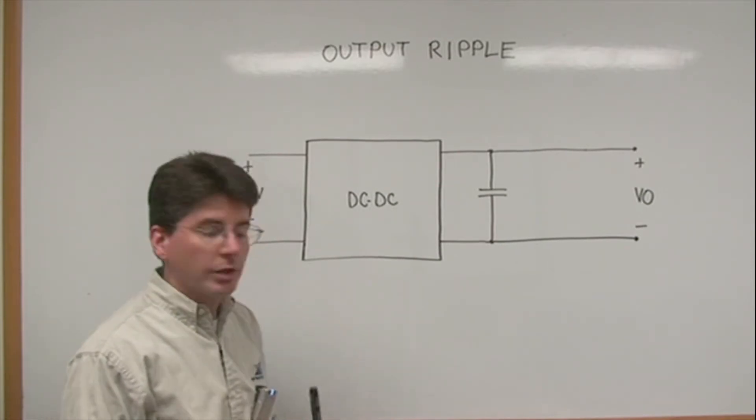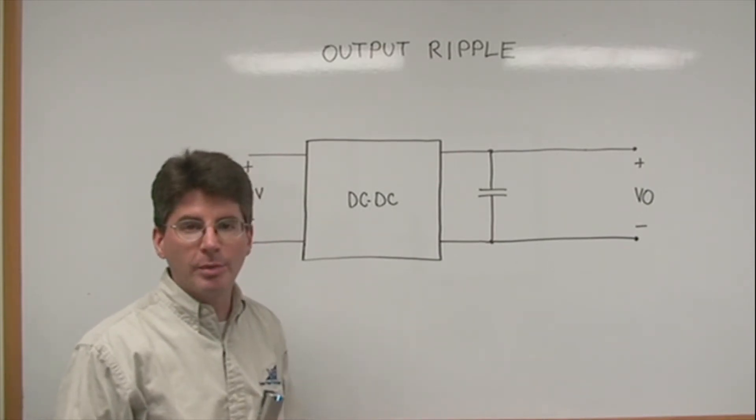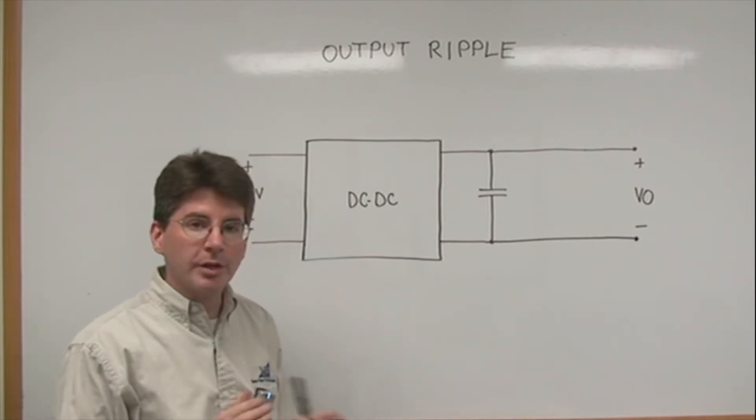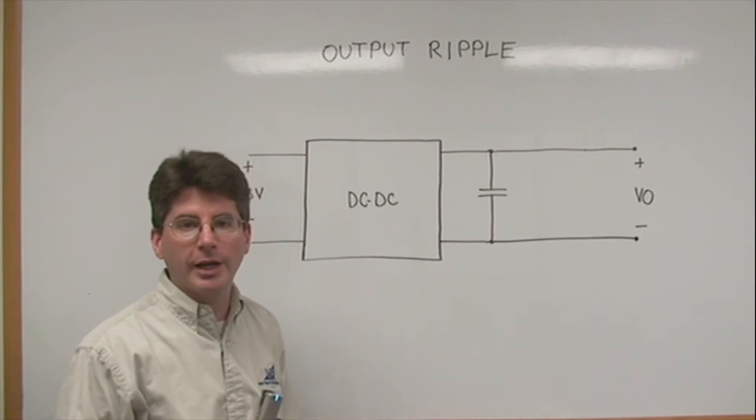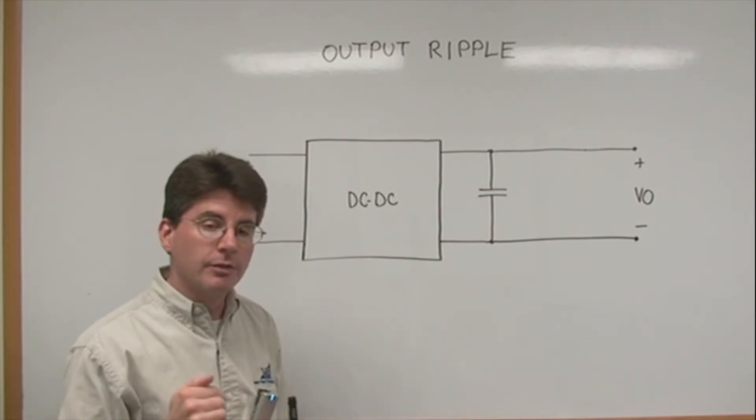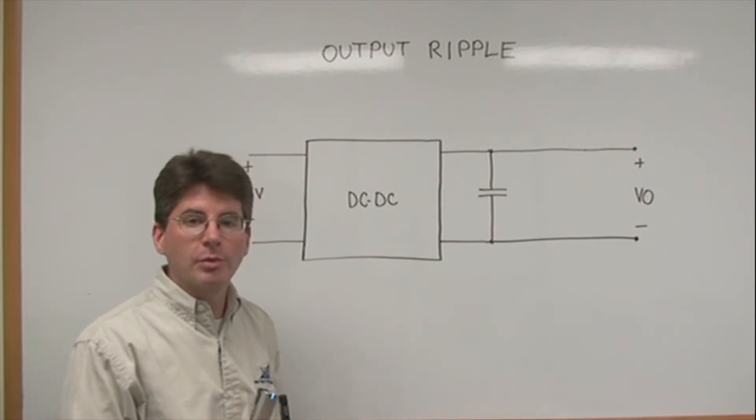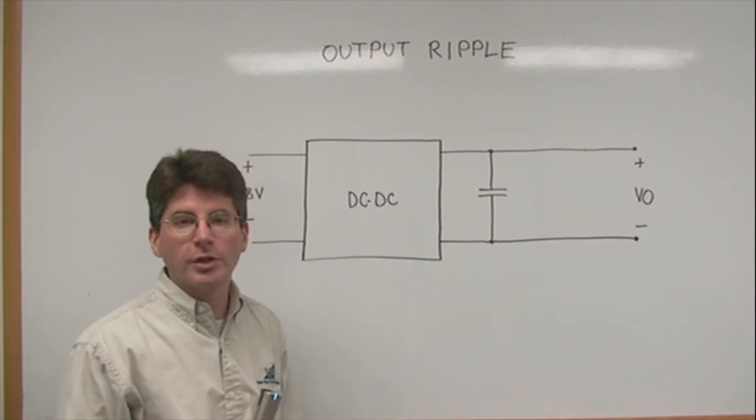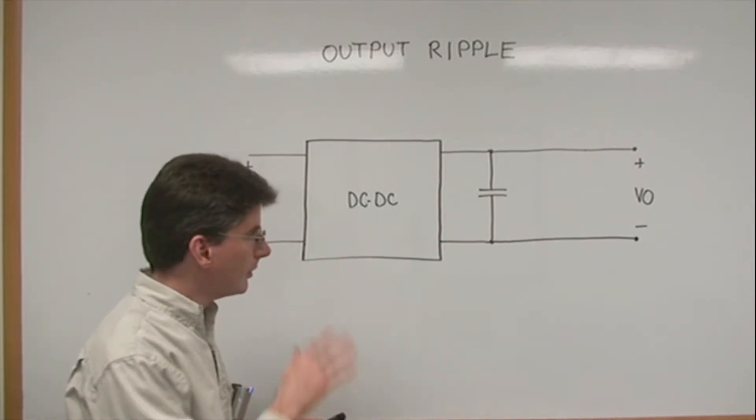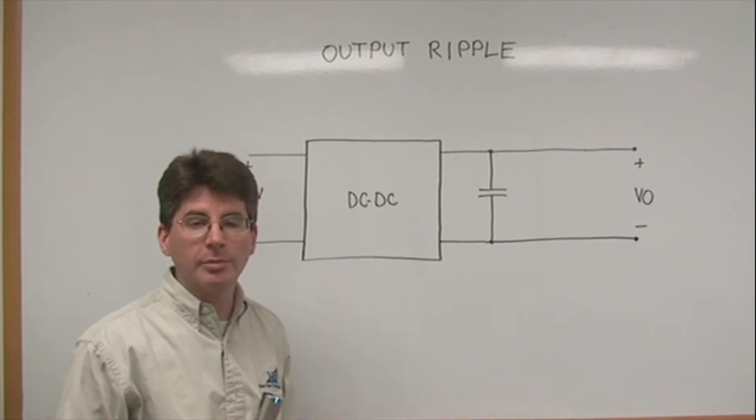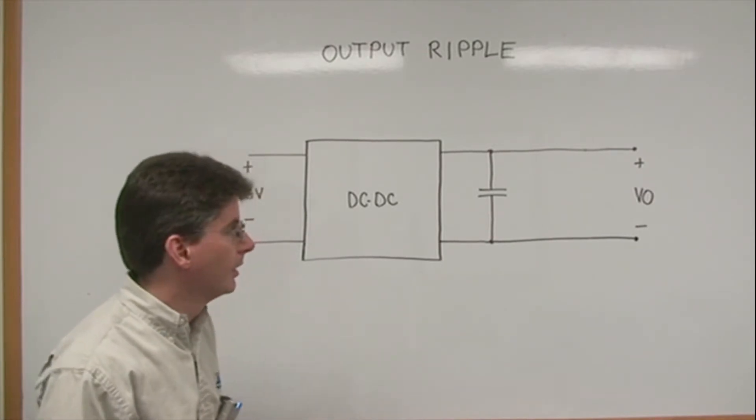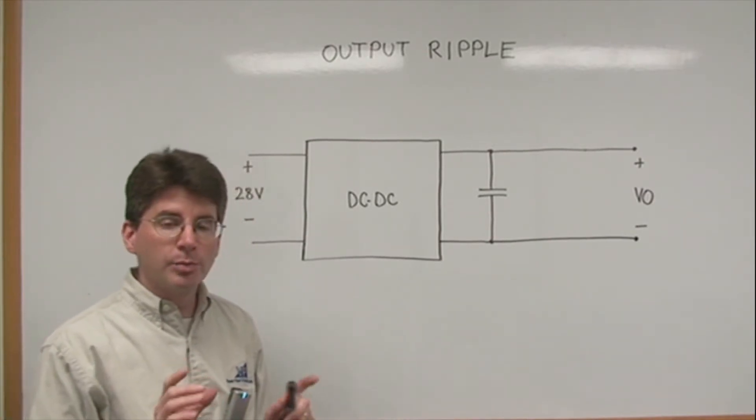This is by far the simplest way to reduce output ripple and output noise, and it is the most effective. Use a low ESR ceramic output capacitor. In fact, we would recommend a small capacitor, one microfarad to ten microfarads, for any application. For ultra-low ripple requirements, you might push that as far as a hundred microfarads. This can get your ripple down into the 10 millivolt peak-to-peak range.